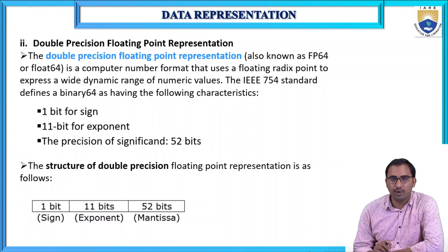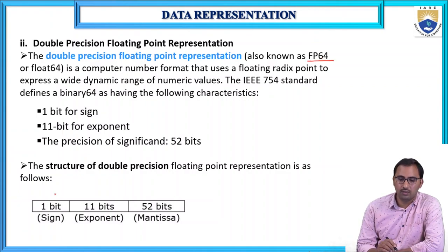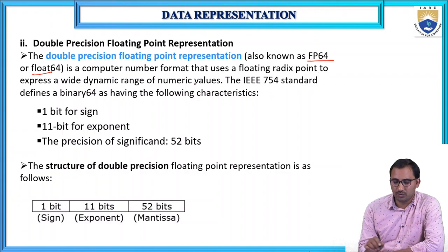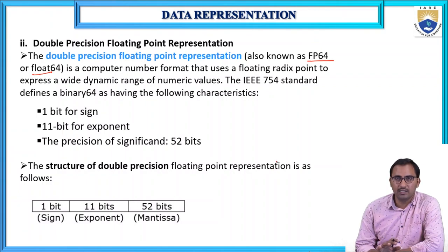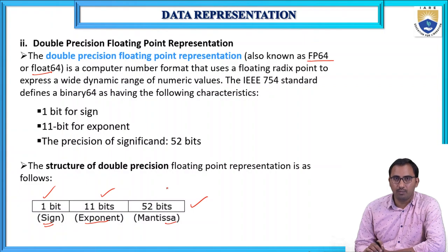The double precision floating point representation, also known as FP64 or float64, uses 64 bits total: 1 bit for the sign, 11 bits for the exponent, and 52 bits for the mantissa.